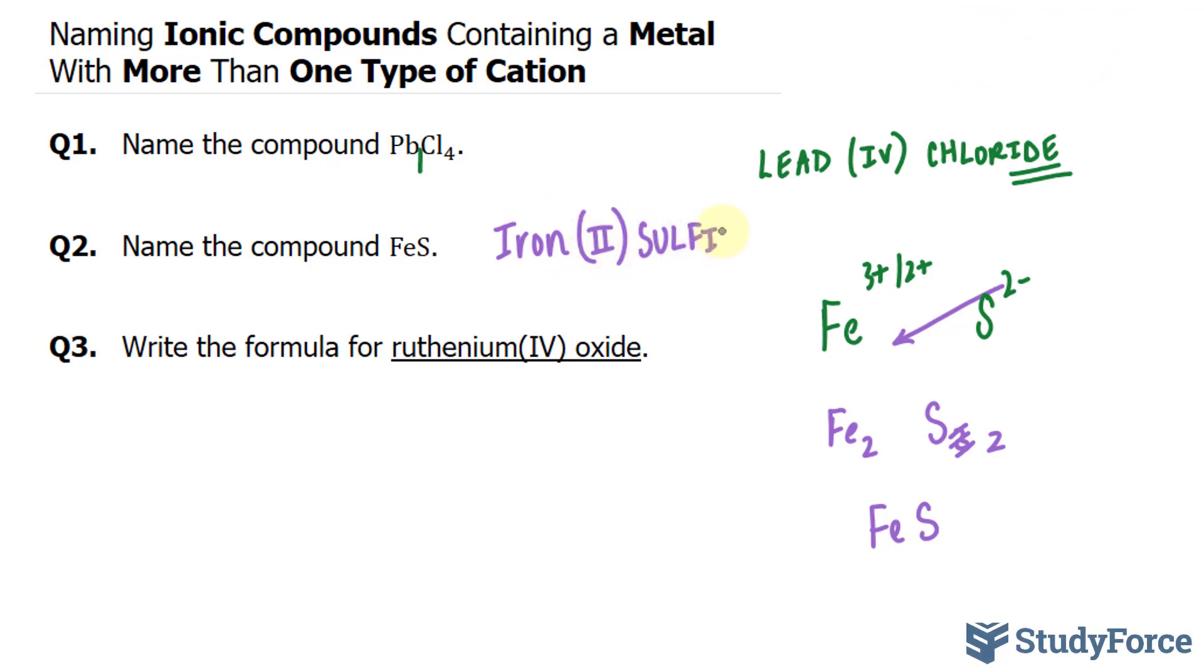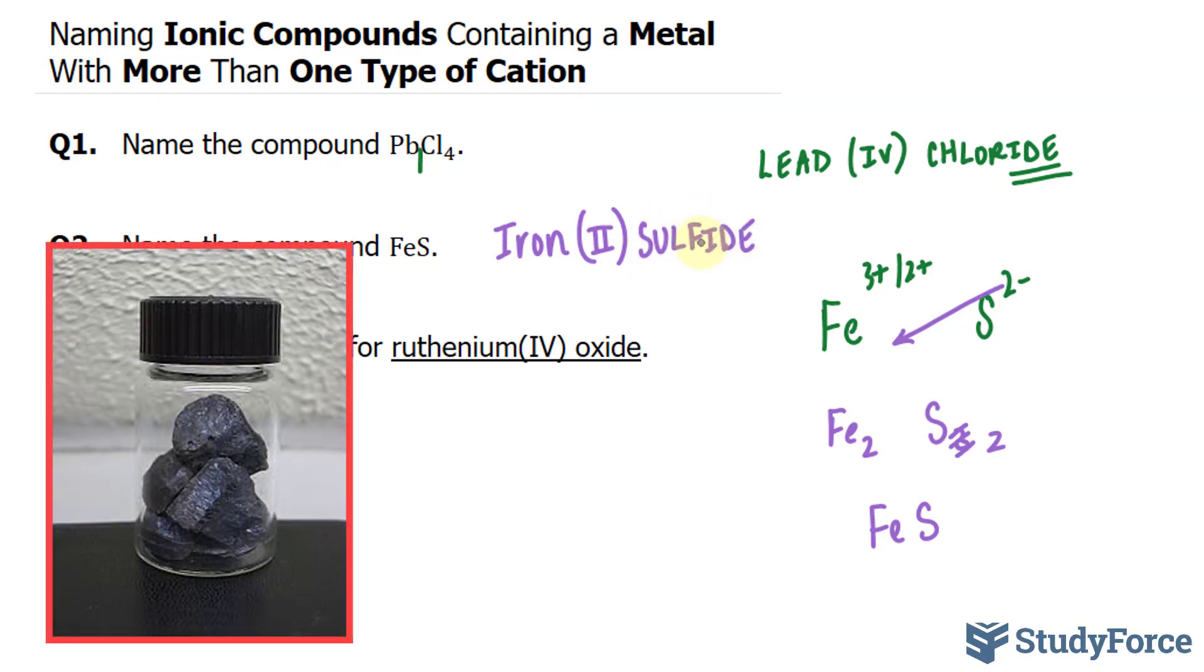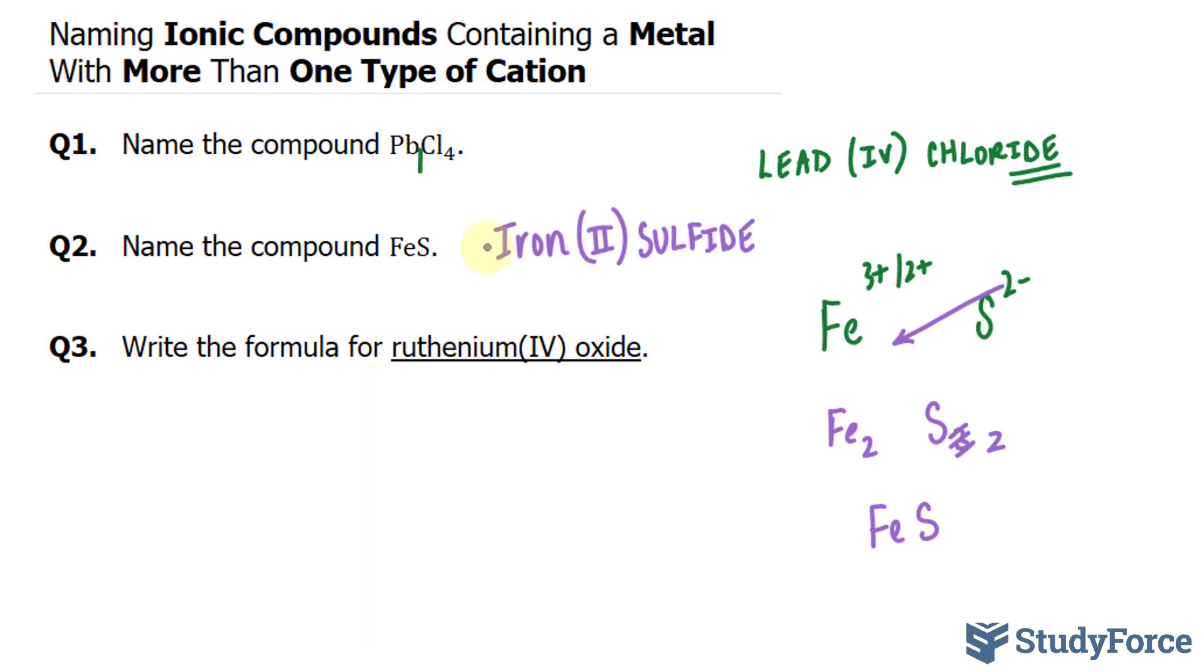You keep the base of the name the same and you change its ending with I-D-E. Keep in mind that some teachers will want the Latin version of the name instead, where instead of iron, you would use ferrous for the 2 plus charge and ferric for the 3 plus charge. So another name for this would be ferrous sulfide.